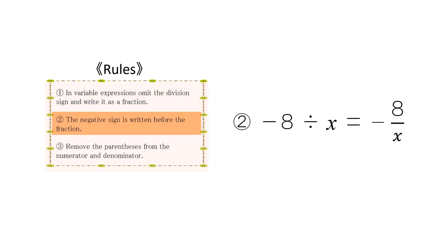The second rule is that the negative sign is written before the fraction. Negative 8 divided by x is expressed as -8/x.